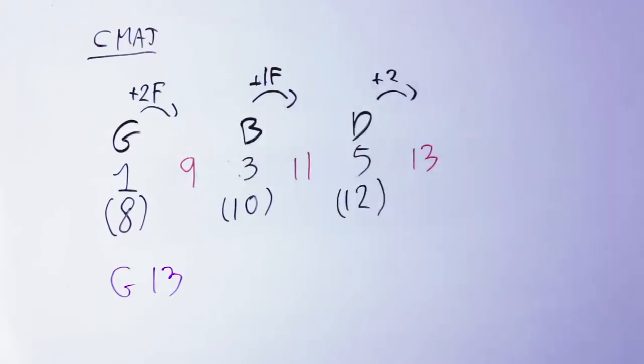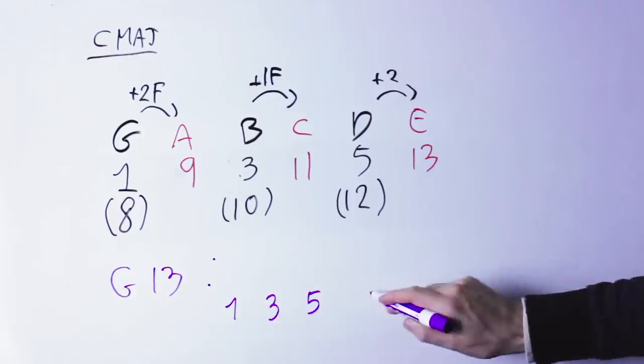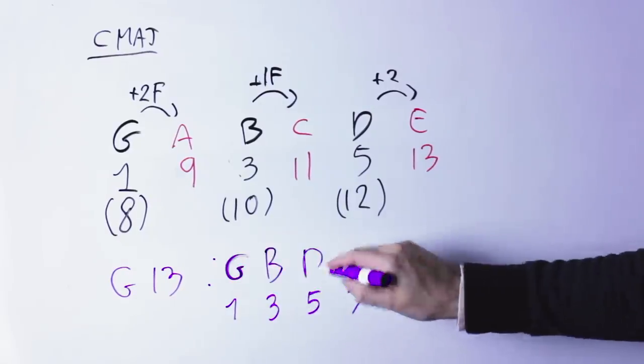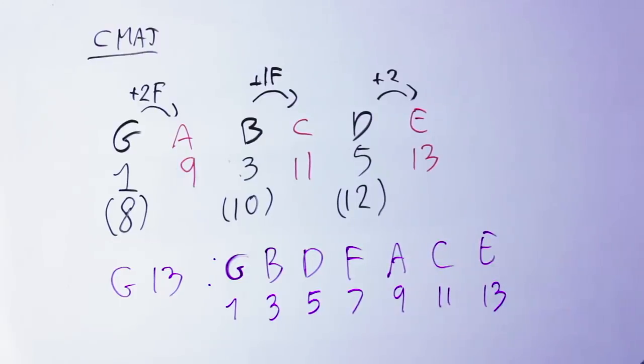If you have a chord like a G thirteen, then again, you put in the G major triad, then the seven, nine, eleven, and thirteen, all the odd numbers up to thirteen. So the notes in this case are G, B, D, F, A, C, E. And this is a seven note chord, which is going to be pretty hard to play on a six string guitar, but you're going to see later what do we do in this case.